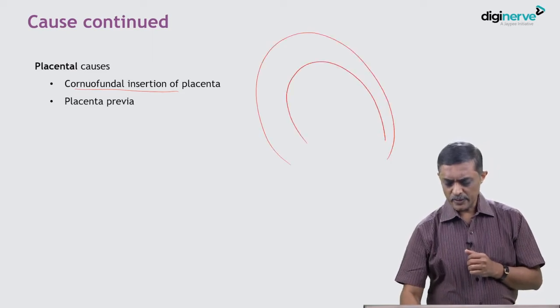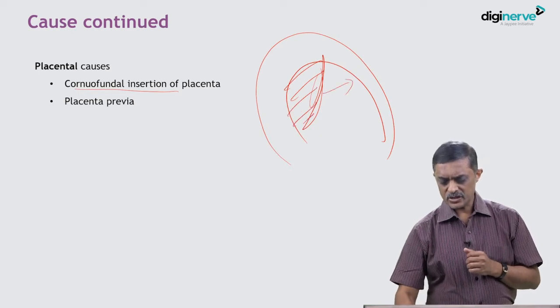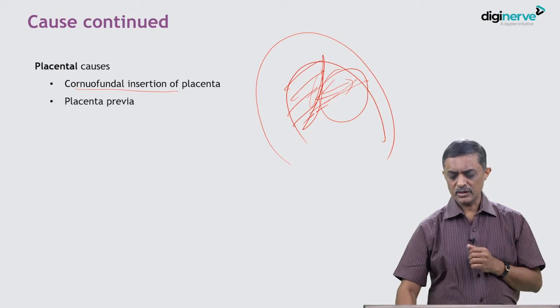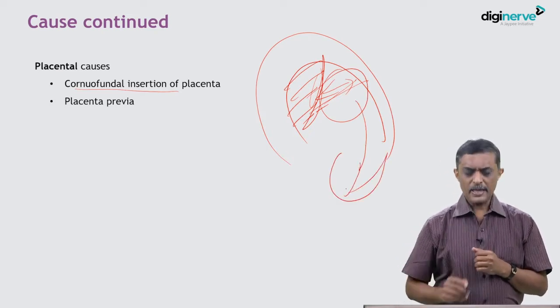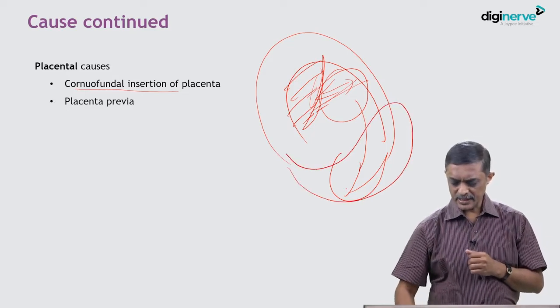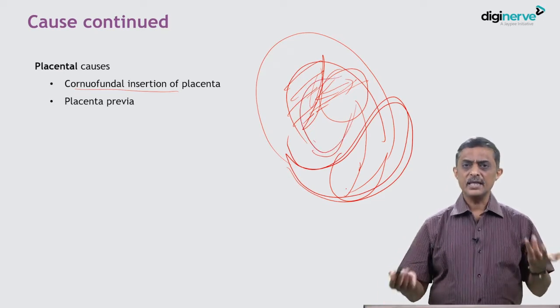Placental causes: cornuofundal insertion of the placenta — when the placenta is inserted at the fundal region, there is less space at the fundus, so the head feels more comfortable there and the breech occupies the lower pole. Placenta previa, for the same reason — the placenta is sitting low so the baby is comfortable in a breech or malpresentation position.